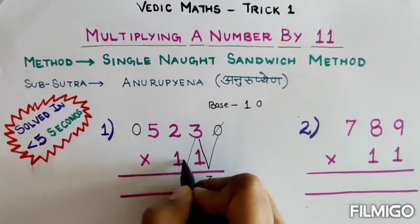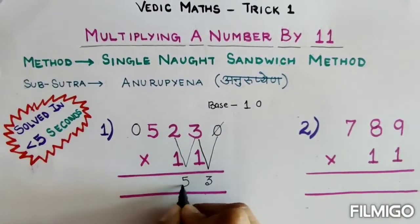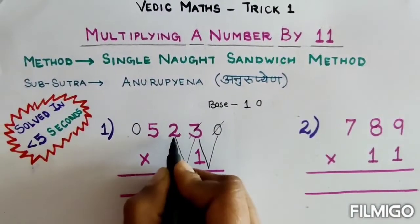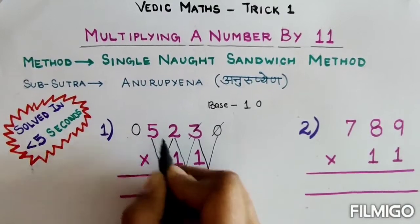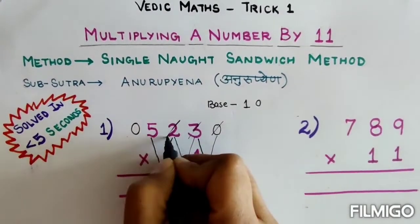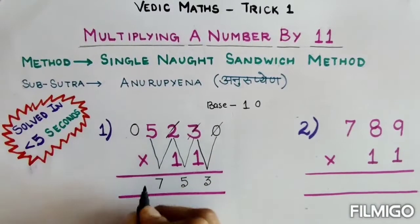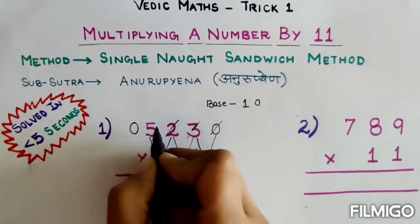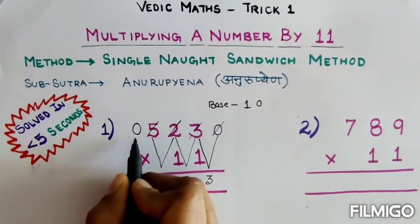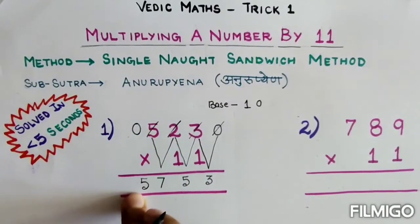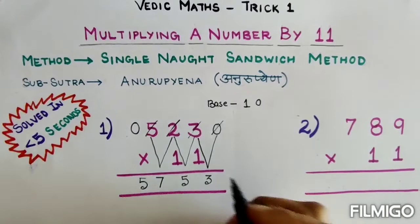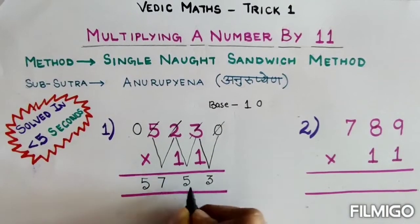3 plus 2 is 5, I will cross this 3. 2 plus 5 is 7, cross 2. 5 plus 0 is 5, cross this. Now I am left with 0 here. I don't have two digits, so I will stop writing my answers at the bottom. Now this is my answer: 5753.